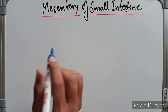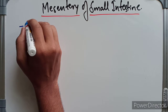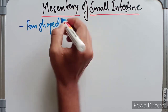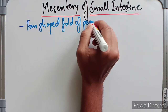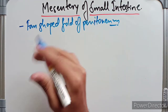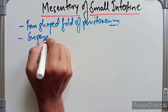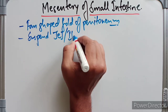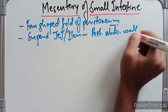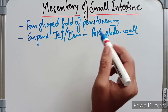Welcome to my channel. In this video we are going to discuss the anatomy of the mesentery, or the mesentery of the small intestine. The mesentery is a broad fan-shaped fold of the peritoneum that suspends the coils of the small intestine — the jejunum and the ileum — from the posterior abdominal wall.